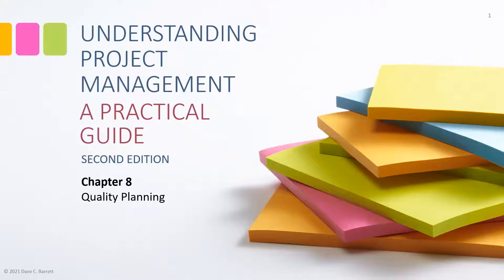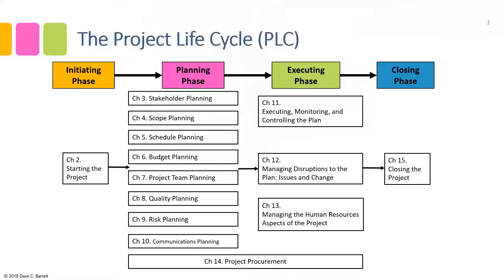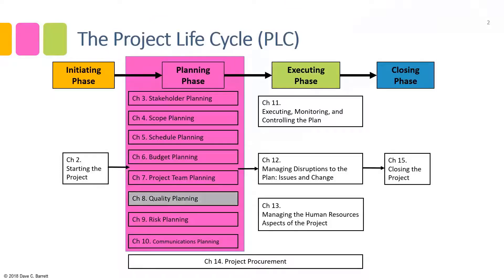Welcome to this video lecture for the text Understanding Project Management: A Practical Guide, Second Edition. This is Chapter Eight: Quality Planning. We're going to look at our project life cycle — we remain in the planning phase, looking at the quality planning process. As a reminder, this planning is done in combination with the other planning processes; it is not done in isolation. As you look at scope, budget, schedule, and team, you'll also be building your quality plans, as they are linked to the others.